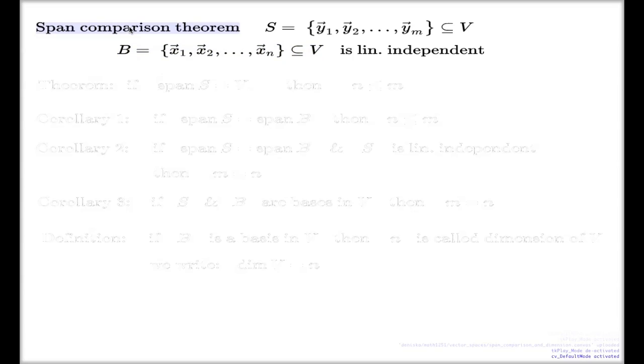Now this Span Comparison Theorem, and actually the same theorem is present in your yellow book, even though I don't remember right now which section of the yellow book is that. It goes like this: if the first set of vectors, S, is spanning, and that's how I write this in symbols, if Span of S is equal to the whole vector space...